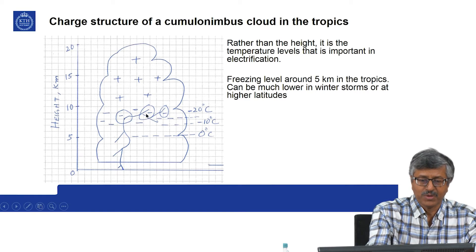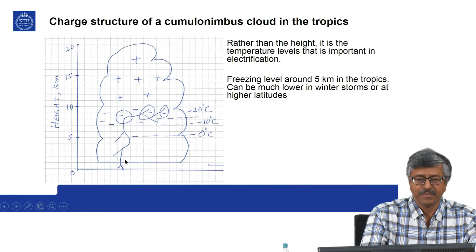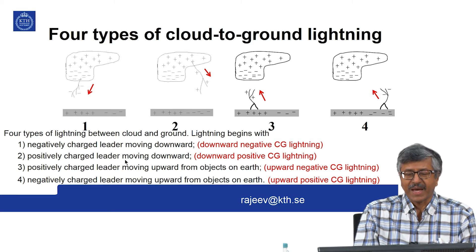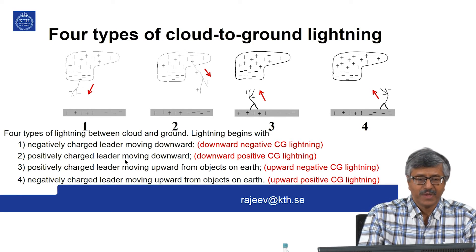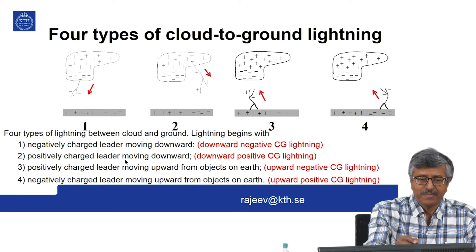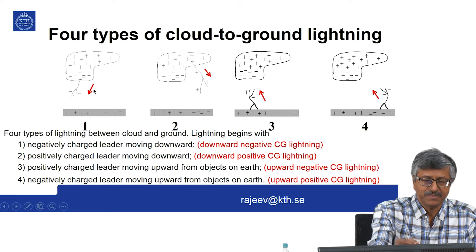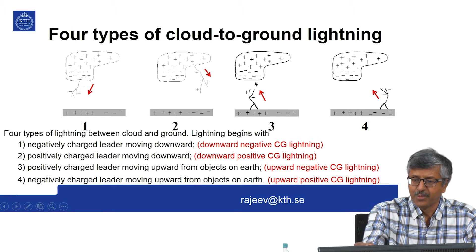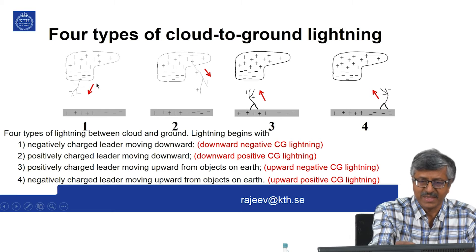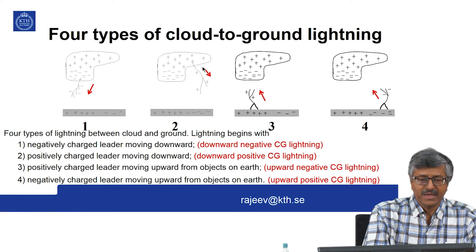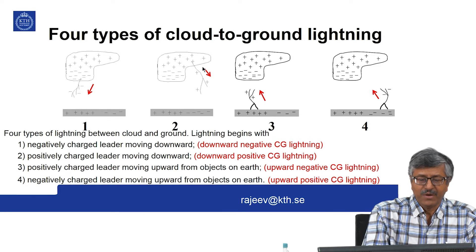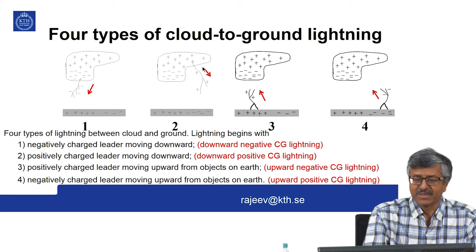These are the four types of cloud-to-ground lightning. Based on the initial direction of the leader, you call it downward lightning or upward lightning — types three and four are upward lightning, while one and two are downward lightning. And depending upon the polarity of the charge that is neutralized in the end, you have negative lightning as well as positive lightning.